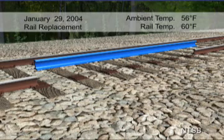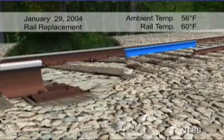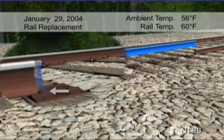Let's look at the rail contraction in detail. As the arrow indicates, when the welder cut the rail, it rapidly contracted because the steel was cold. Therefore, the gap between rail ends became larger.